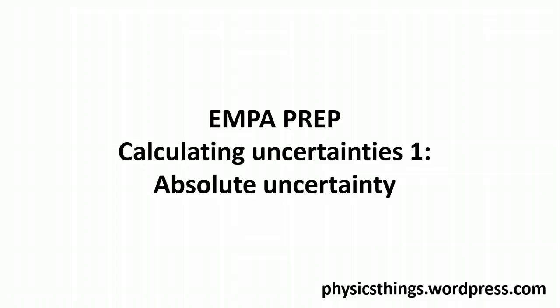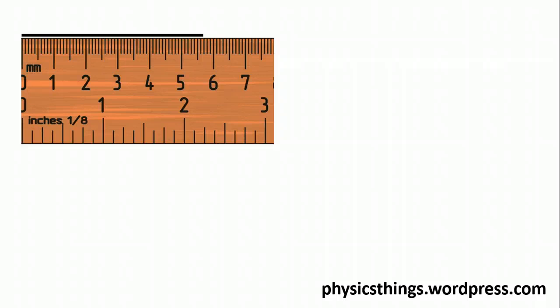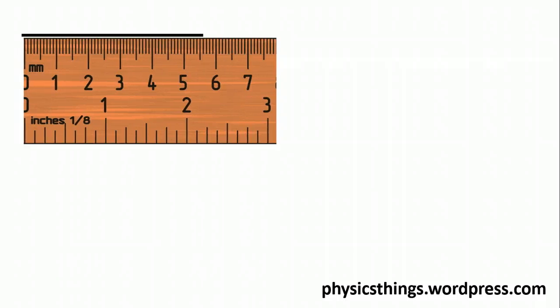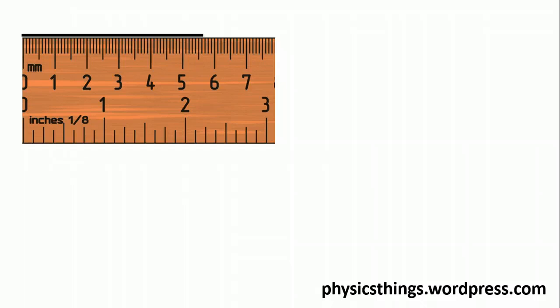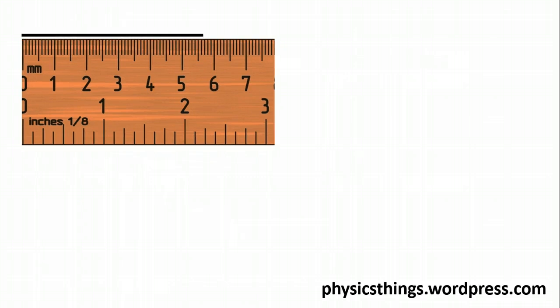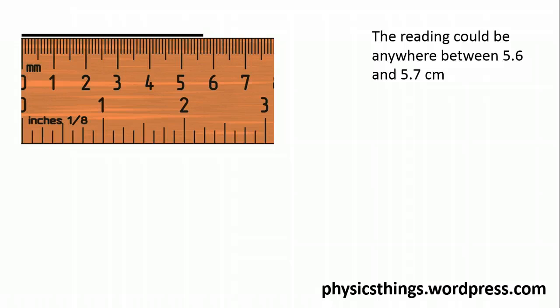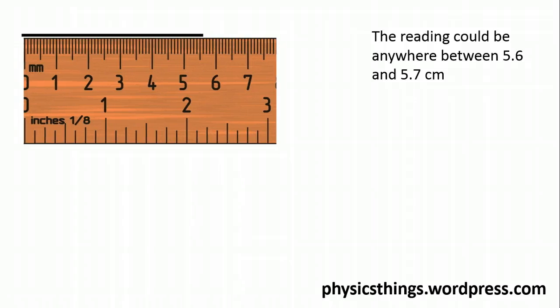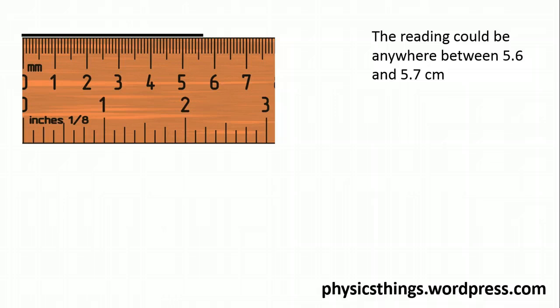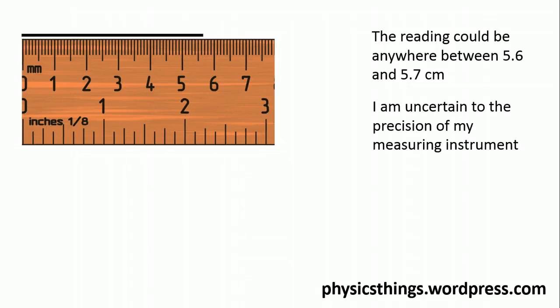The first of these is the absolute uncertainty. Now, if we look at measuring the length of a line, you can see that depending on where you start it or where you finish, there's a little bit of inaccuracy. You're limited to how precise you can be. In the case of this ruler here, we are limited to the precision of our measuring instrument. For this, the reading could be anywhere between 5.6 and 5.7 centimeters. So the absolute uncertainty, if you're taking a single reading, is down to the precision of my measuring instrument.